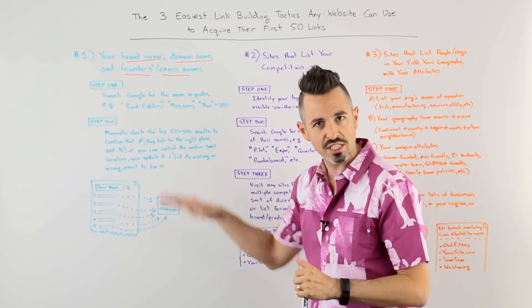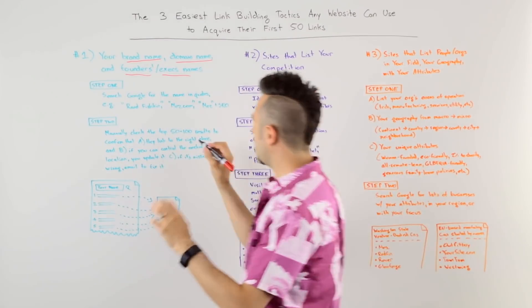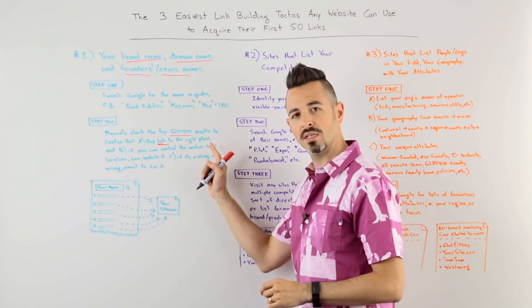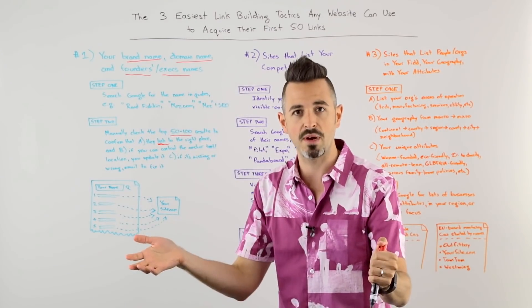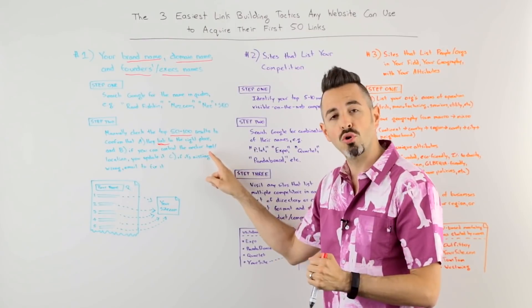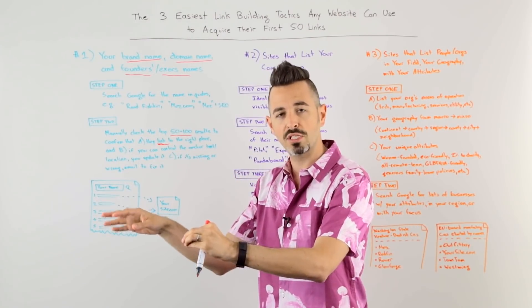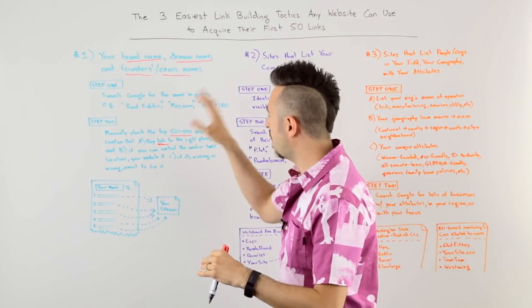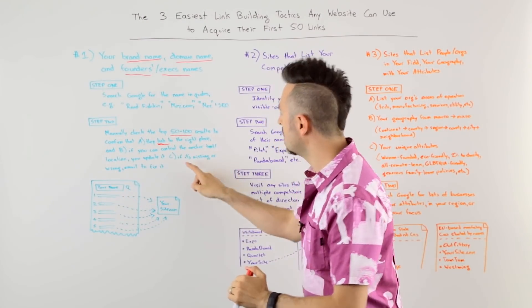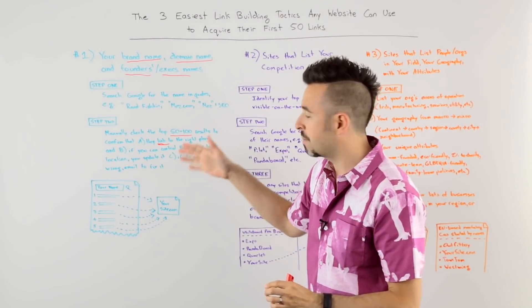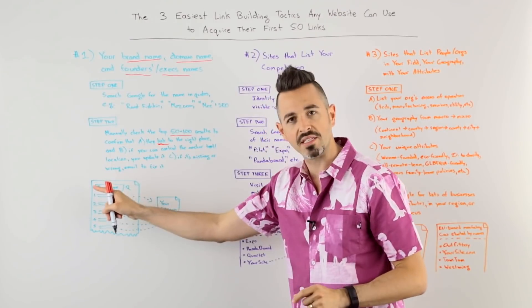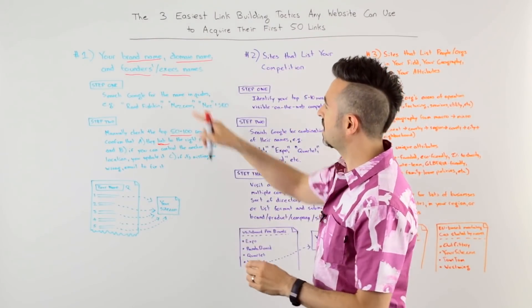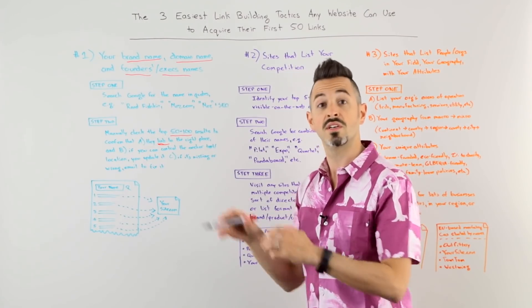Any of these searches will result in a big list of Google results. Then manually check the top 50 to 100 results, confirming three things. One, that they link to the right place. If there are mentions of Rand Fishkin that don't link to Moz, we should fix that — contact those people. If you can control the anchor text and link location, you can update it. For example, my LinkedIn has a link to Moz; I can update that if the domain changes, like when it changed from SEOmoz to just Moz. If the link is missing or wrong, find the right people, email them, and fix it. As a result, every single mention in Google should have a link to your website — from brand name, domain name, and founders and executives.